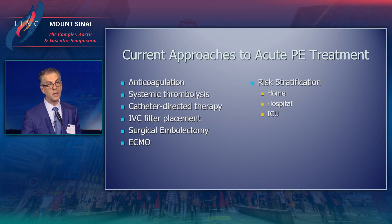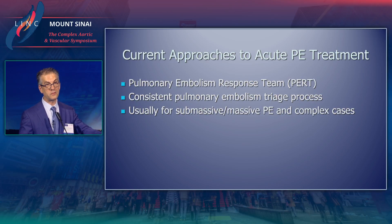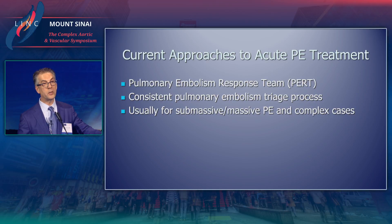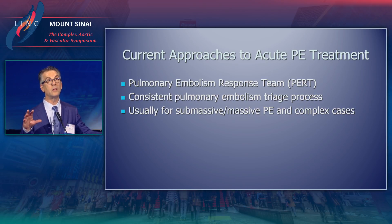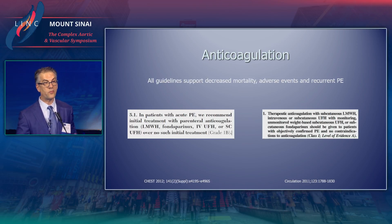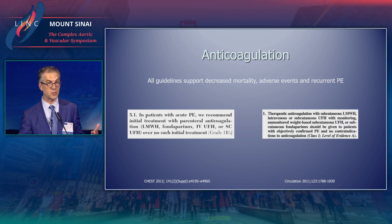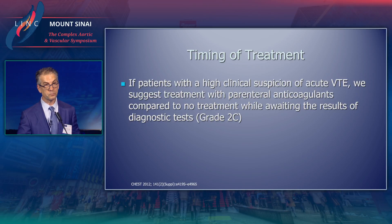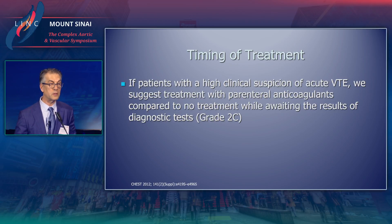Current approaches to PE treatment include anticoagulation and fibrinolysis, with further talks covering catheter and surgical approaches. When making decisions for PE patients, even without a formal PERT (pulmonary embolism response team), it's important to have a consistent triage process. This is usually reserved for submassive and massive cases. There is level-one evidence in both the CHEST and American Heart guidelines to give anticoagulation immediately. If clinical suspicion is high, don't wait for test results — give anticoagulation right away.